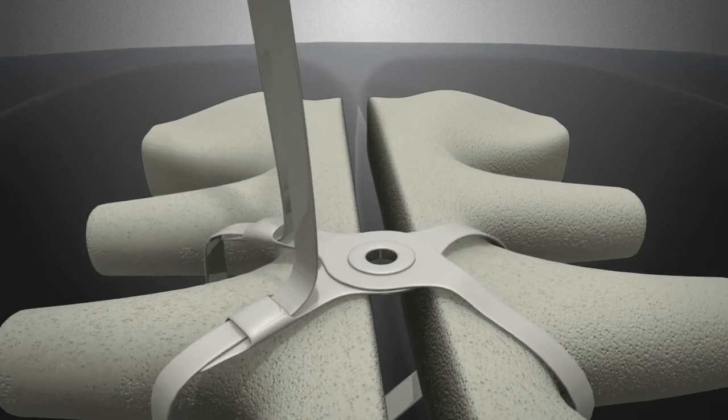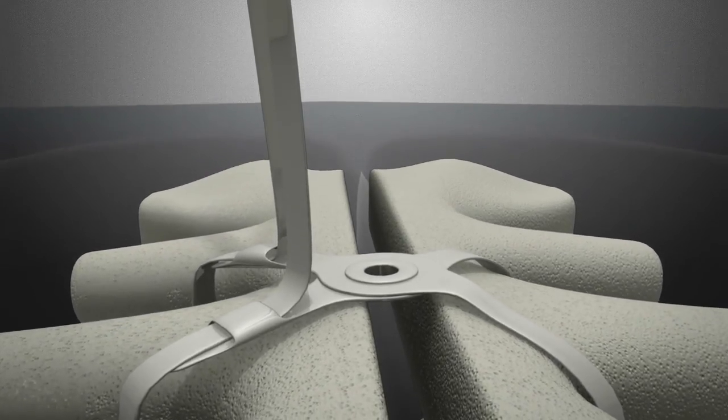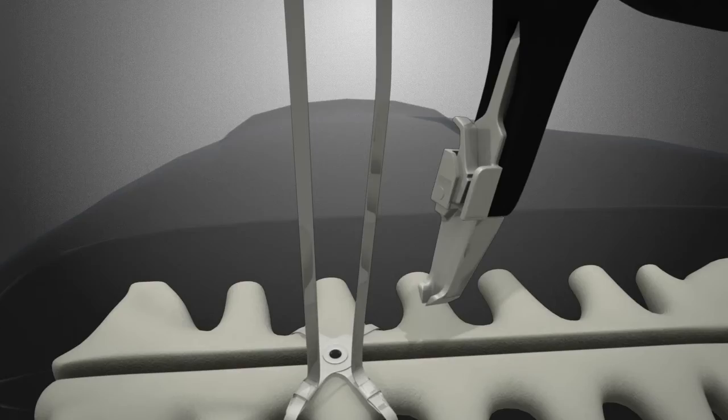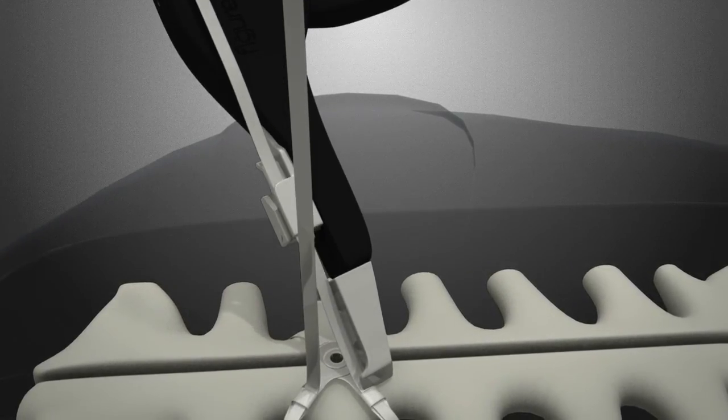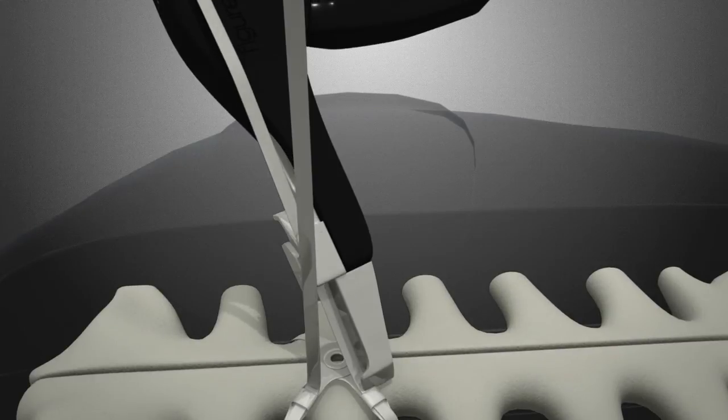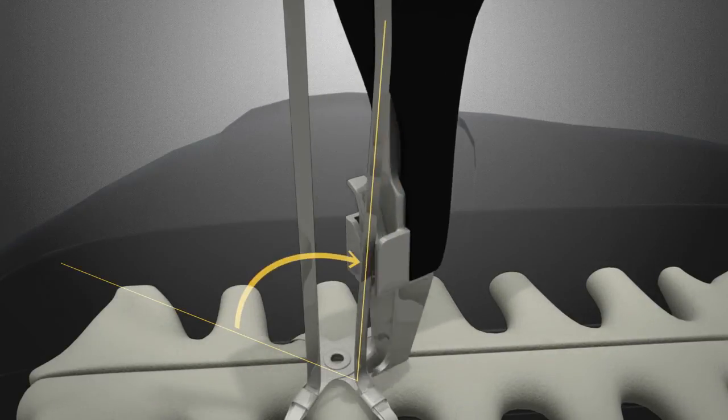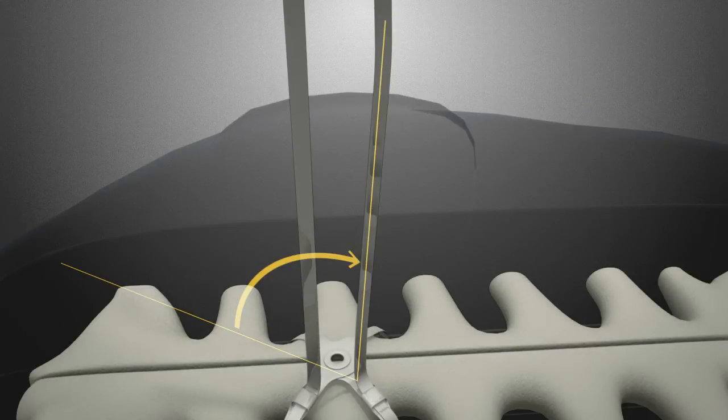Attention is then given to the manubrium where the Figure 8 devices are tightened. On these devices, you may tighten them to the desired position and final tightness. Once you have reached approximation of the sternal halves, the strap is bent to 90 degrees and left alone until all straps have been tightened.